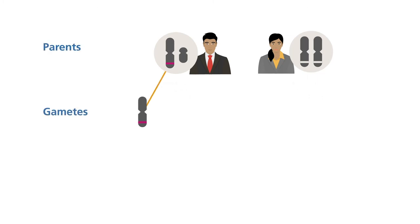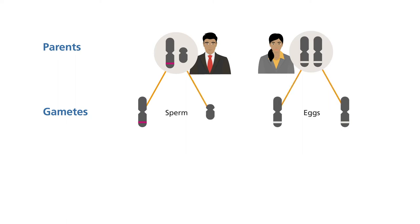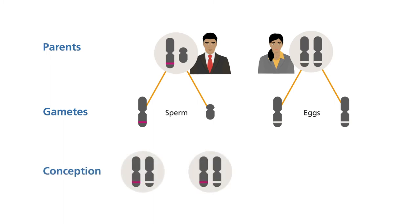A parent passes on one or other of each pair of their chromosomes to each child; which one they pass on is down to chance. There are therefore four possible combinations of sex chromosomes that the children of this couple could inherit.